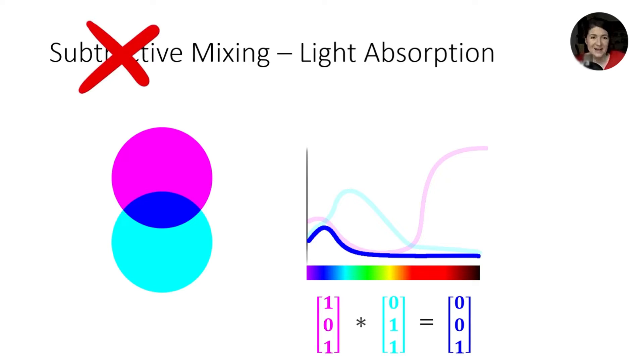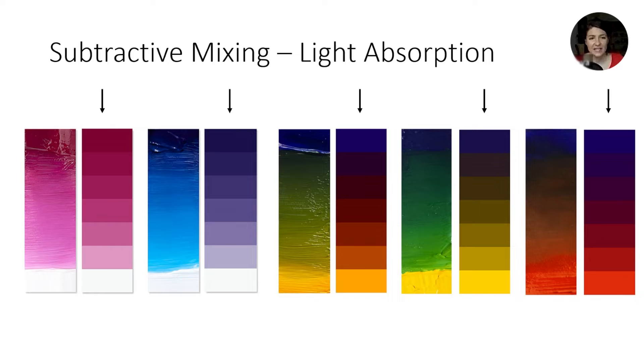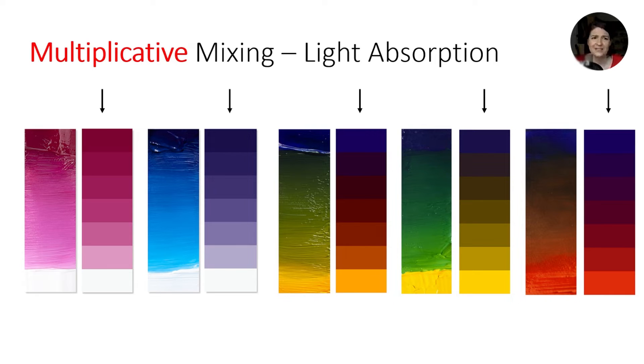So subtractive mixing is a completely misleading notation. Anyway, physically, this is still incorrect, because light absorption is just a part of the pigment mixing process. Paints don't just absorb light, they also scatter it. And that's vitally important, because look how wrong this looks. So the bottom line is that subtractive mixing is not the answer to pigment's behavior. And it should also be called multiplicative mixing. So let's move on from this.